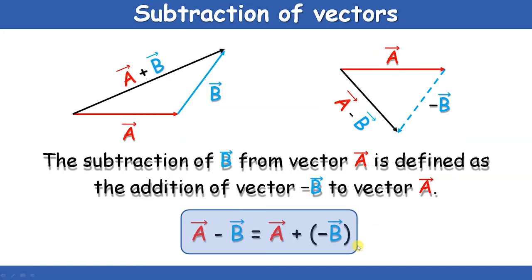Now, subtraction of vectors. Subtraction is understood in a different manner in vector analysis. The subtraction of B from vector A is defined as the addition of negative B to vector A. Here, vector A and vector B are given. Suppose you want to subtract B from A — you write its negative vector. This is in the upper direction; put it in the reverse direction, and the closing end of the triangle gives the difference A minus B. So A minus B equals A plus (minus B).